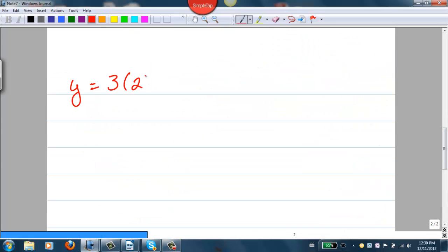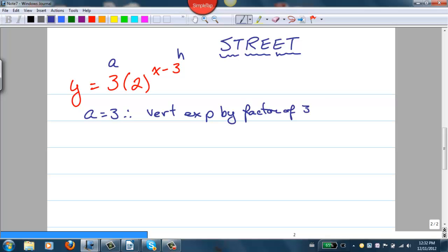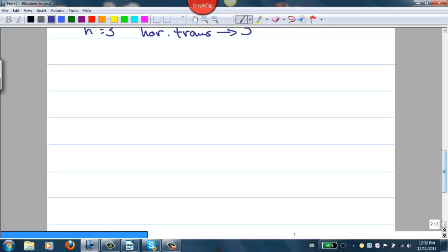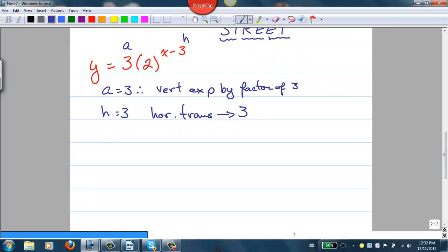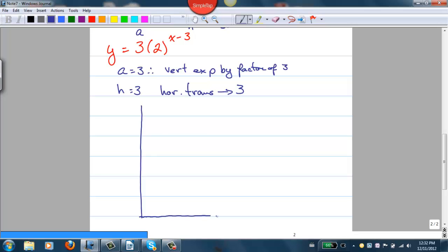So let's take a look at a particular function in two different ways that we could graph these. The first one, we're just going to graph y equals 2 to the x to start with, and then see how the a and h transformations affect them. As we learned earlier in the course, we'll deal with the stretches and compressions first, then the reflections, and then the easy translations. The a value is 3, so there's a vertical expansion by a factor of 3. h is 3, so there's a horizontal translation of 3.